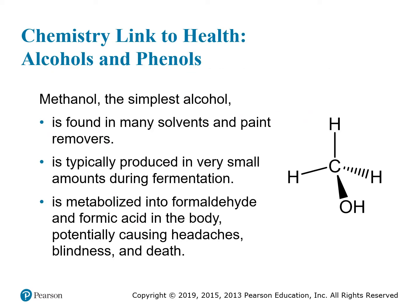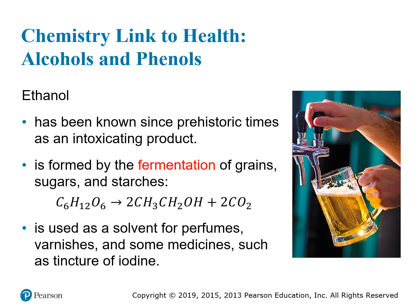Alcohols and phenols are found in many common commercial products. Methanol, the simplest alcohol, is found in solvents and paint removers. It's a byproduct of fermentation but occurs in very minute quantities; it metabolizes into formaldehyde and formic acid, which can attack the optic nerve, causing blindness, headaches, and even death in small doses. Ethanol is drinking alcohol, present in beer and wine, known since prehistoric times. It's formed from fermentation of carbohydrates like grains, sugars, and starches, and is also used as a solvent for perfumes, varnishes, and medicines such as tincture of iodine.